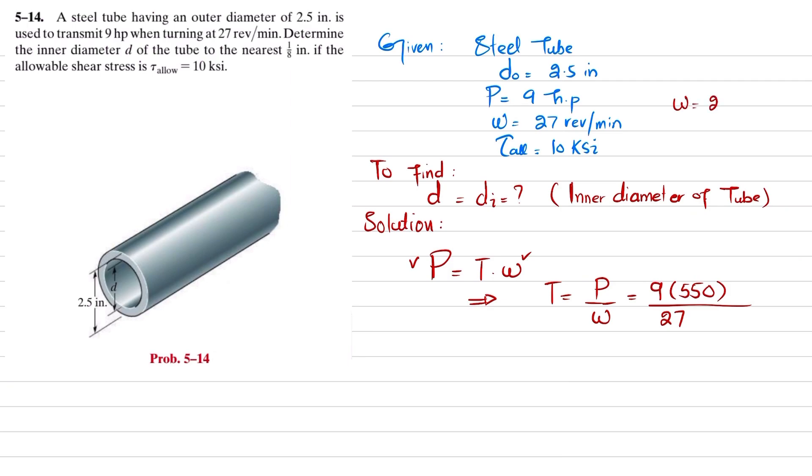27 revolutions per minute we will convert. Omega is equal to 27 times 2π radians, and if you want to convert minutes into seconds, one minute is 60 seconds, so it will be radians per second.